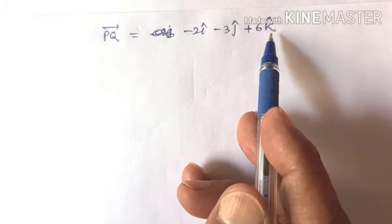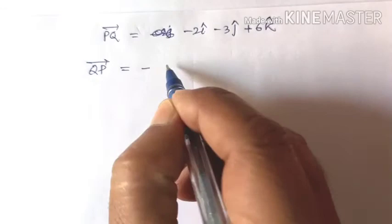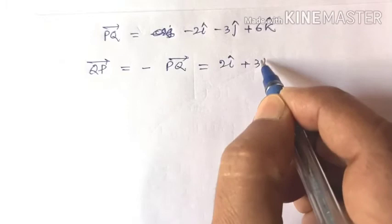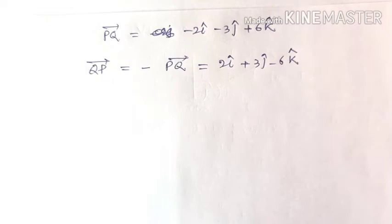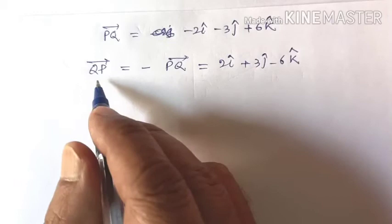Now, the opposite vector of PQ is QP. So QP vector equals minus of PQ vector, which gives 2i plus 3j minus 6k. To find the vector of magnitude 11 along QP, first find the unit vector along QP.